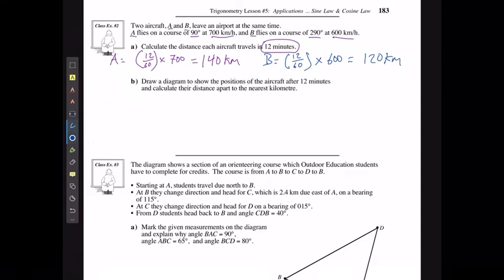First, we're going to draw a diagram to show the positions of the aircraft and calculate how far apart they are to the nearest kilometer. I'm going to draw my north-south east-west grid lines, always stating that heading straight up is going to be north.